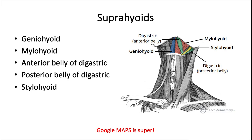Now let's talk about the actual muscles of the neck. The suprahyoids are going to appear above the hyoid bone. The muscles included in this are the geniohyoid, mylohyoid, anterior belly of the digastric, posterior belly of the digastric, and the stylohyoid muscle.